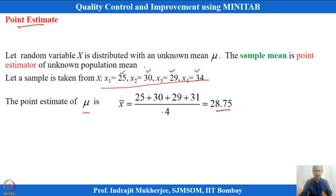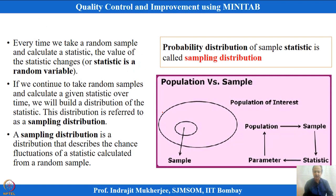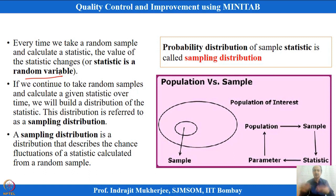This population parameter will keep changing because every time I take samples it will be different, so it is also a random variable. This sample parameter, being a random variable, can follow certain distributions — for example, the normal distribution or other popular distributions.